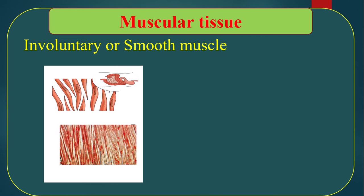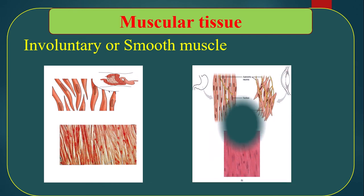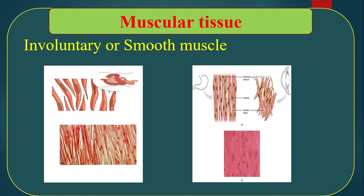Follow the picture. Involuntary muscle is faintly branched and most of the time unbranched. Nucleus is present and the cell is spindle-shaped. It is most of the time present in the digestive system, respiratory system, and blood vessels.